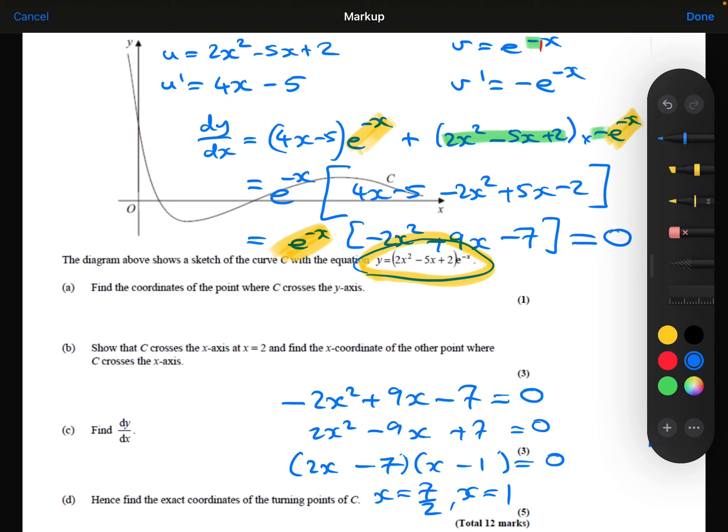When I substitute 7/2 into that, I'll have 2 times (7/2) squared minus 5 times 7/2 plus 2 times e to the minus 7/2. That gives me the answer 9e to the minus 7/2. And then when I substitute 1 in, I get the answer y equals minus e to the minus 1. So just as coordinates then: (7/2, 9e^(-7/2)) and (1, -e^(-1)). These are my two answers for part D.